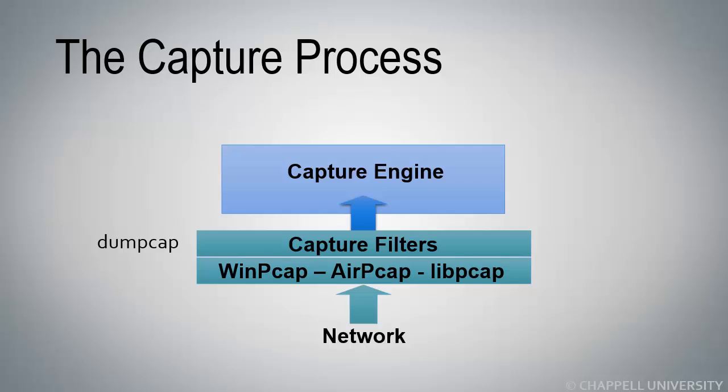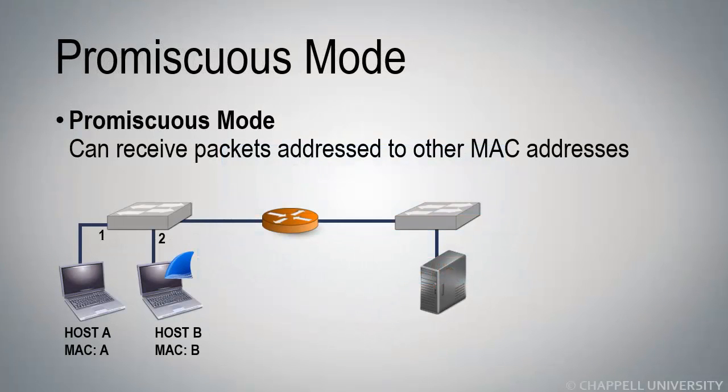We'll take a look at what happens next in the section entitled 'Describe how Wireshark processes packets.' In order for Wireshark to actually capture packets, Wireshark has to see those packets. You not only have to be in the path that the packets travel, but you also need to have the adapter in Promiscuous mode. Promiscuous mode is enabled by default in Wireshark, and it allows you to receive packets addressed to hardware addresses other than your own.